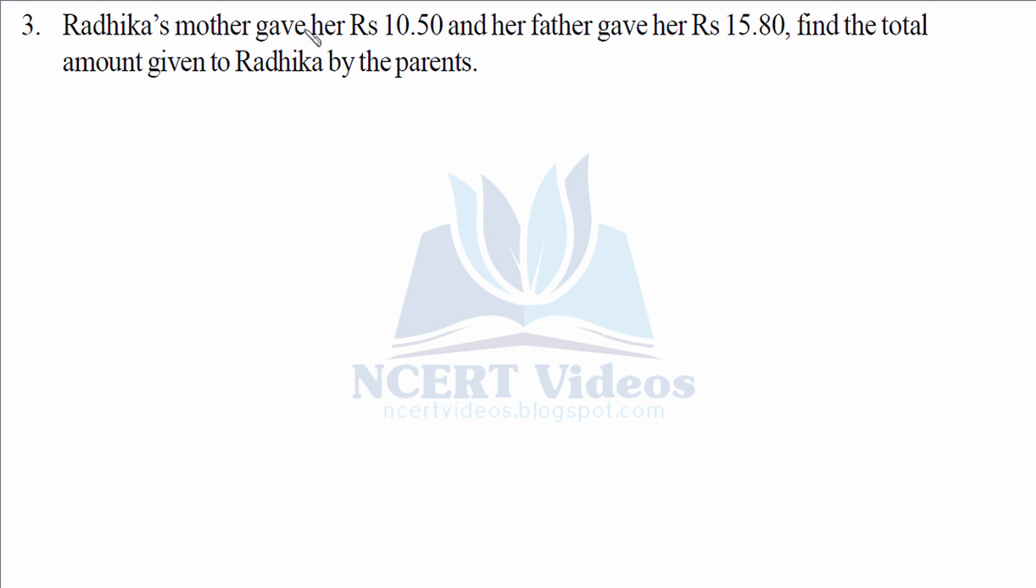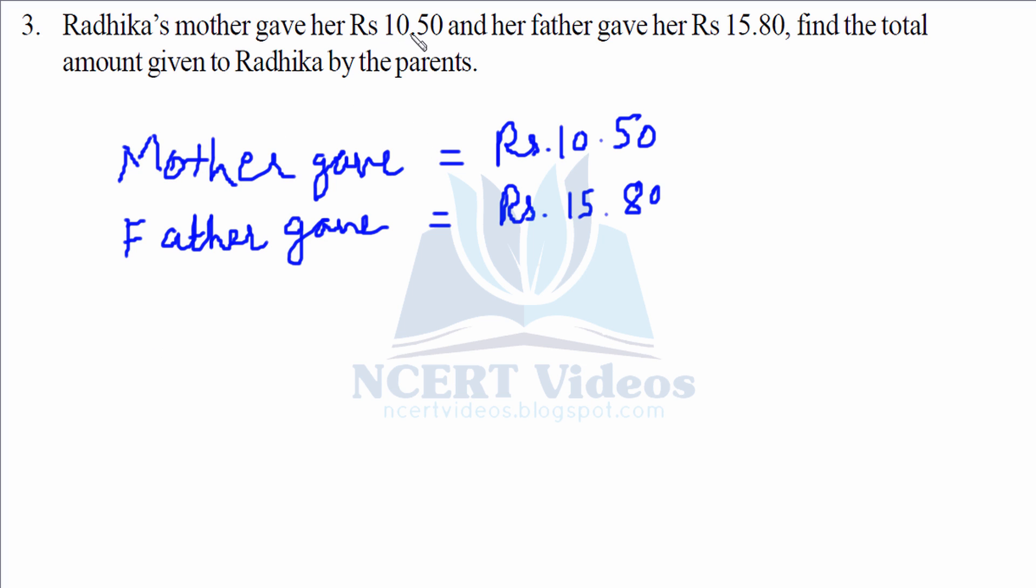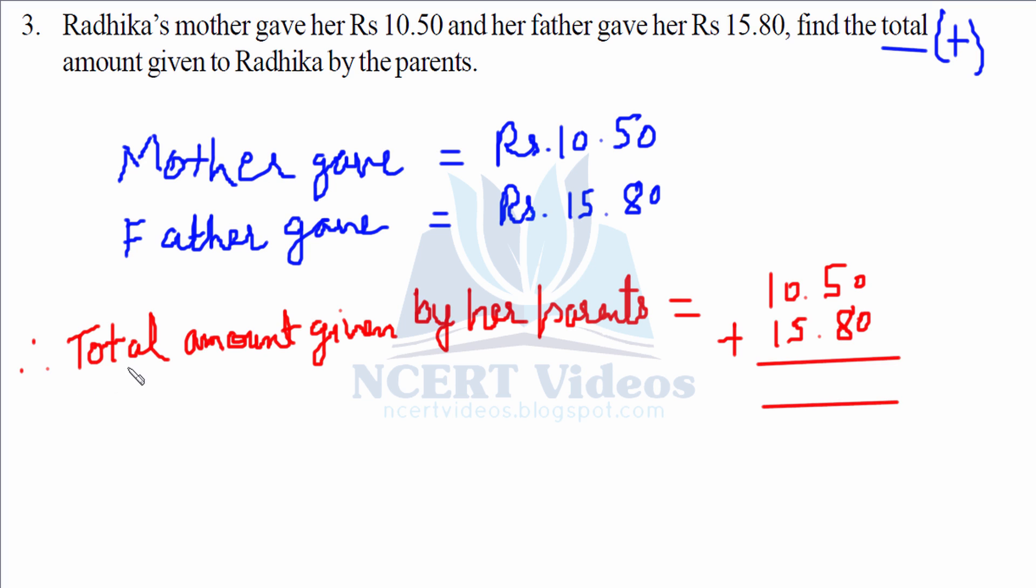Radhika's mother gave rupees 10.50 and her father gave her rupees 15.80. Find total. By mother and father we'll write both and add them because we're asked to find total amount given by her parents. 0, 13, 8 plus 5 is 13, 1 carry 6, 2. Therefore total 26.30.